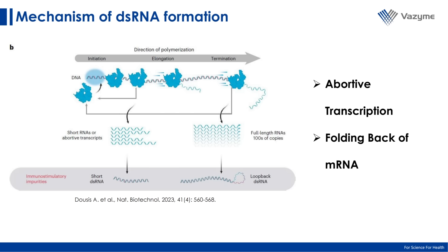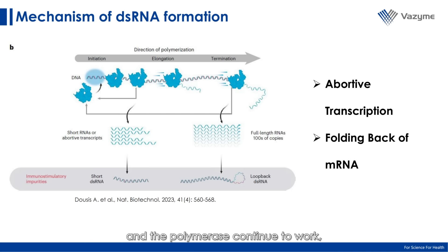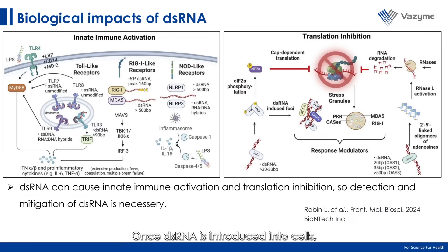The second mechanism occurs when the mRNA folds back at the end of transcription. If the process doesn't stop as it should, the 3-prime end of mRNA may fold back and the polymerase continues to work, using the mRNA itself as a template, which leads to the formation of long loopback dsRNA.